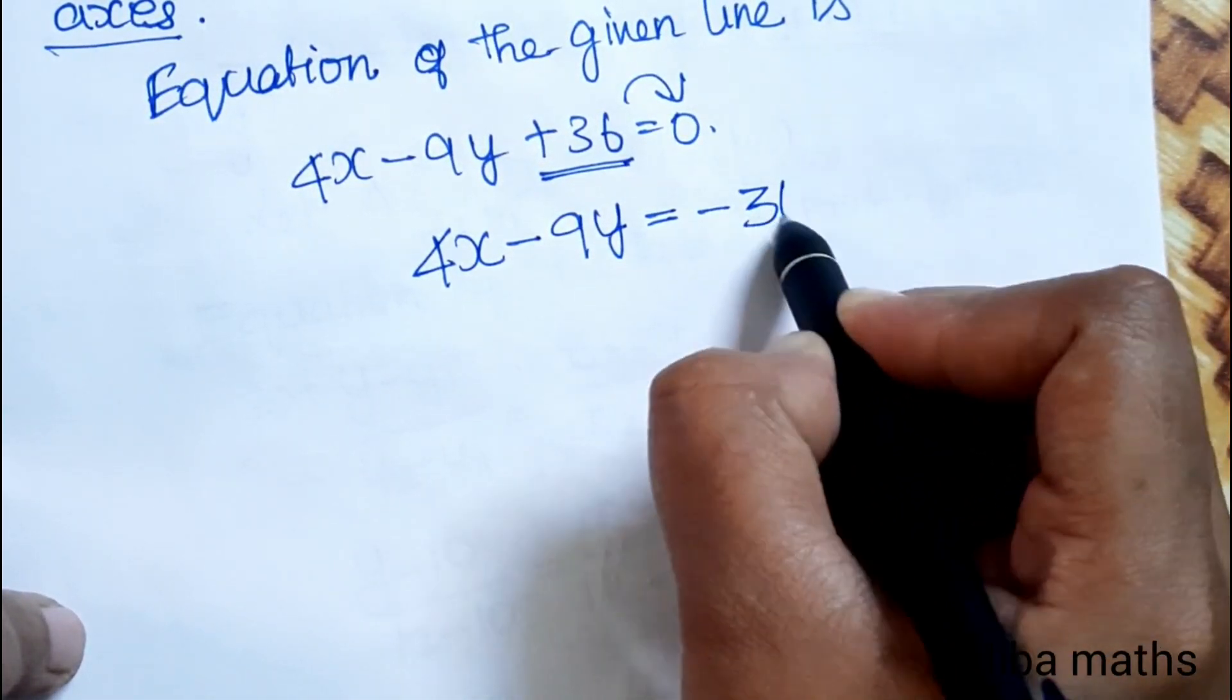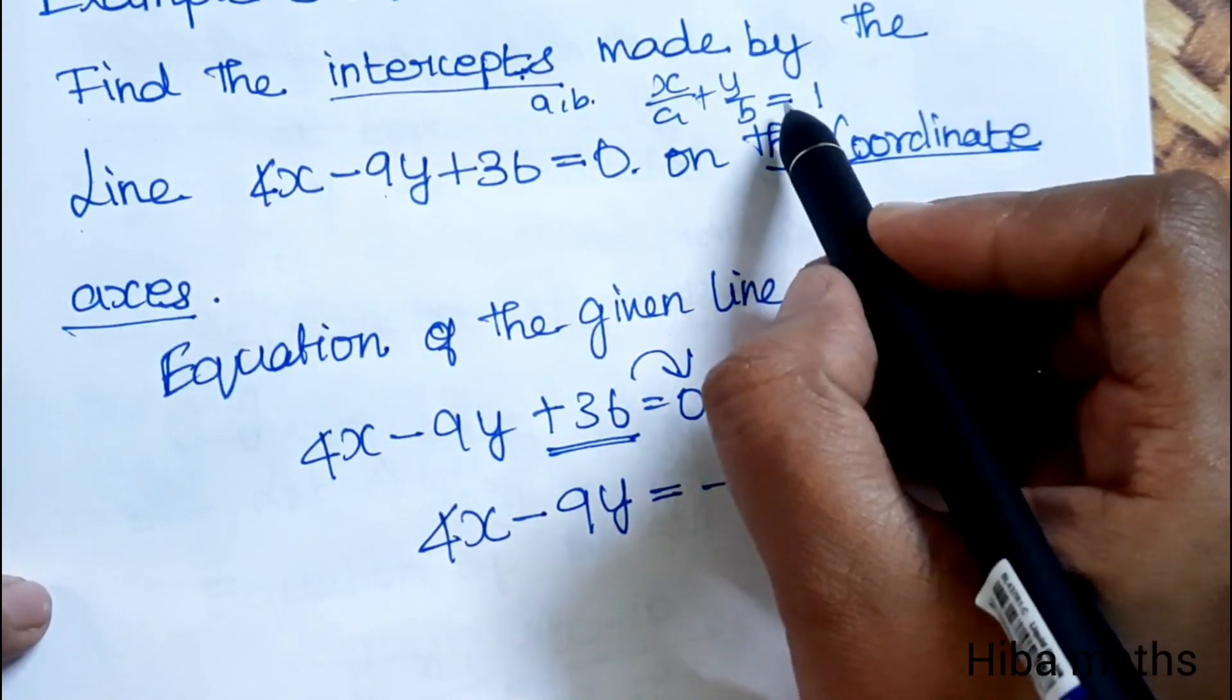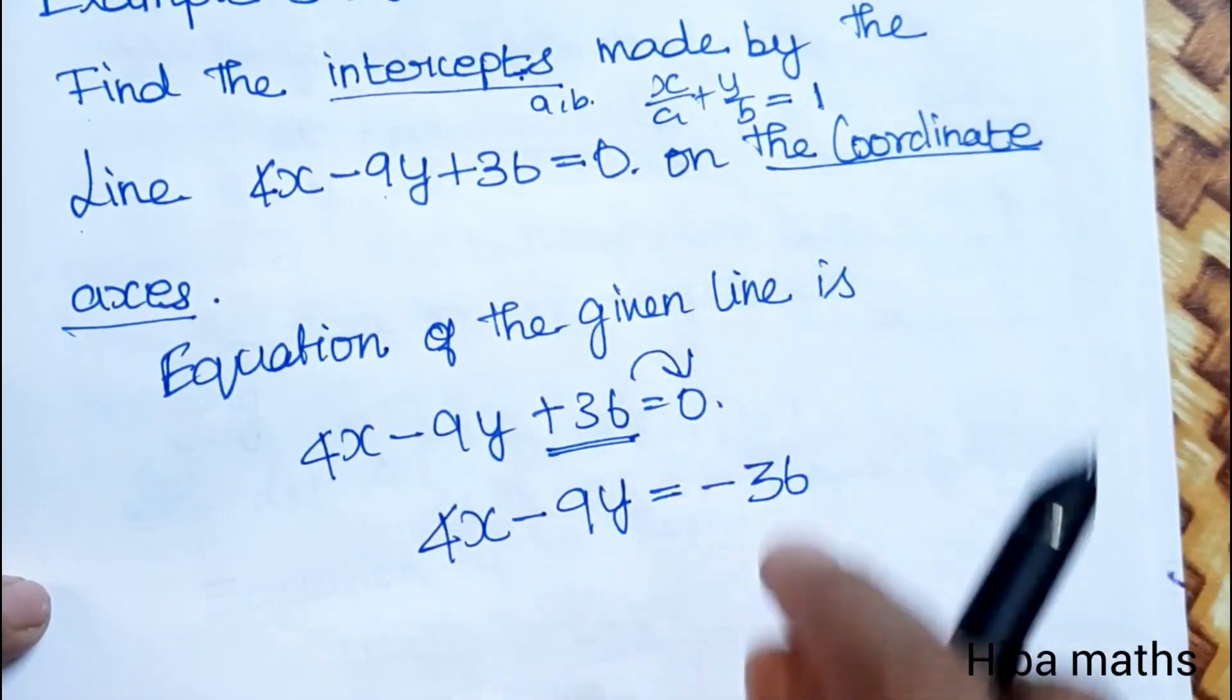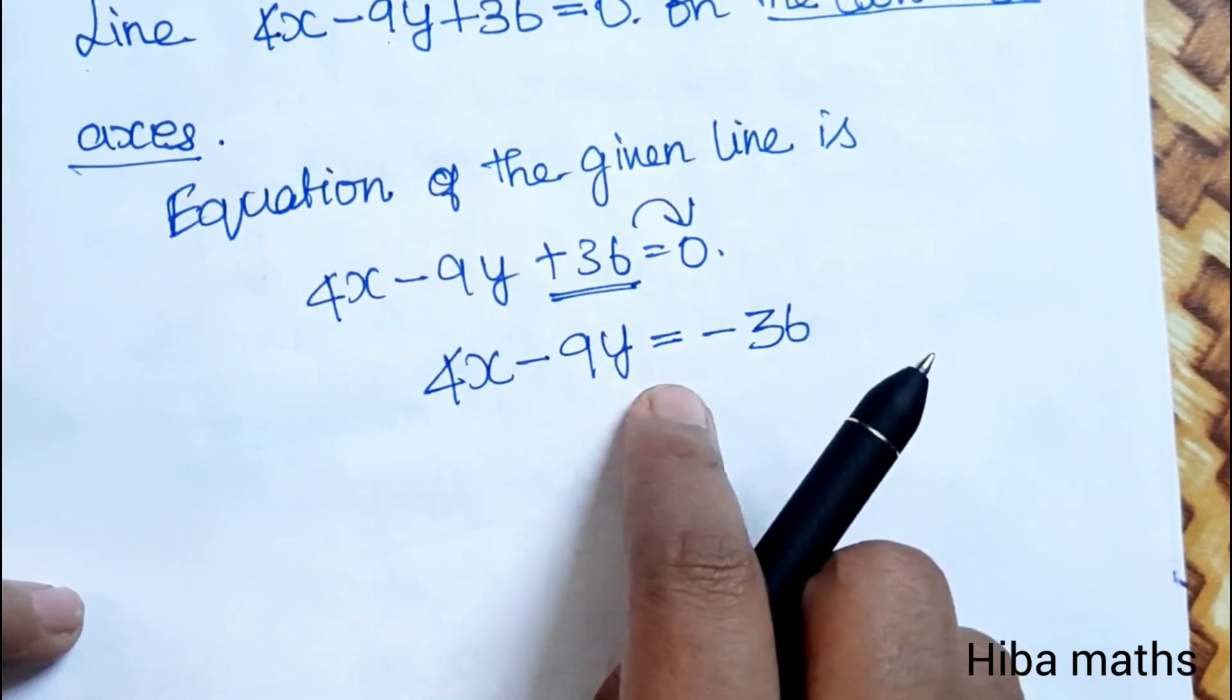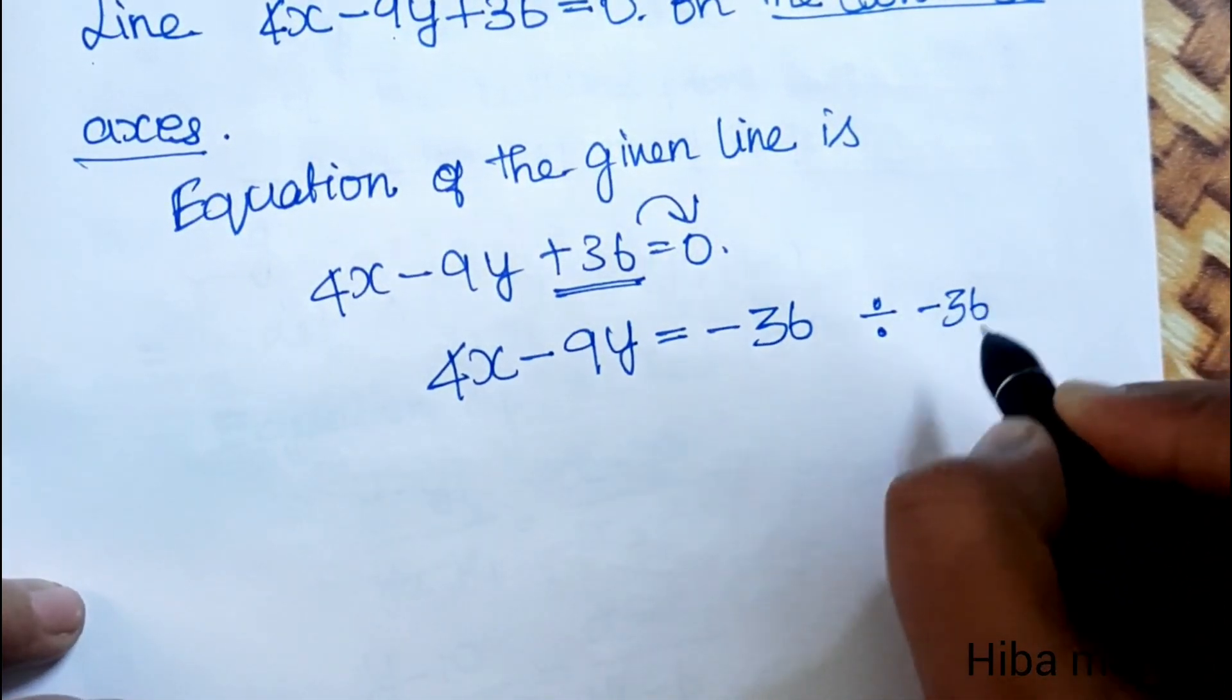Now we need the equation to equal 1. Since we have minus 36, we divide the entire equation by minus 36.